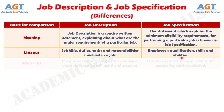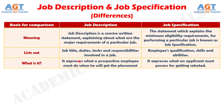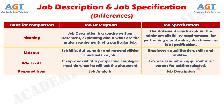Number three: job description expresses what a prospective employee must do when he will get the placement, whereas job specification expresses what an applicant must possess for getting selected. Number four: job description is the outcome of job analysis, whereas job specification is the result of job description.